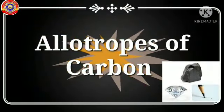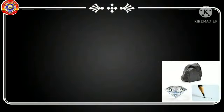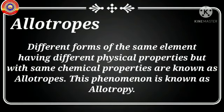Today we are going to discuss the different forms of carbon, their characteristics and uses. Allotropes are the different forms of the same element having different physical properties but the same chemical properties — this phenomenon is called allotropy. Simply put, allotropes refers to one or more forms of an element with the same chemical properties but differing physical properties. For example, carbon exists in nature in different forms.